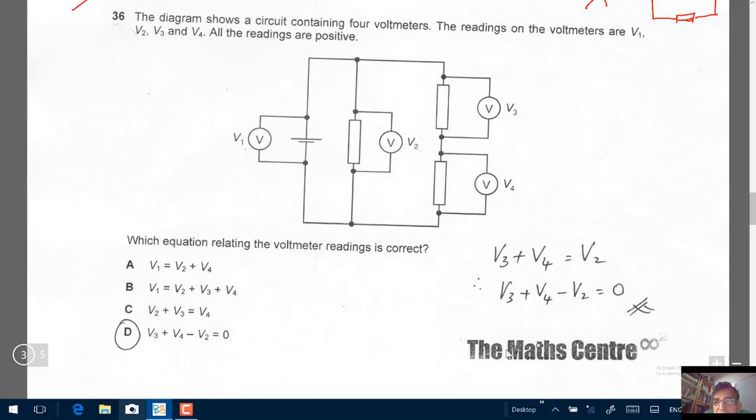So these are in series. These resistors are in series. So the PD across here must be V3 plus V4.